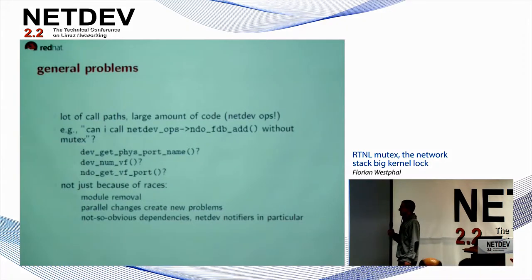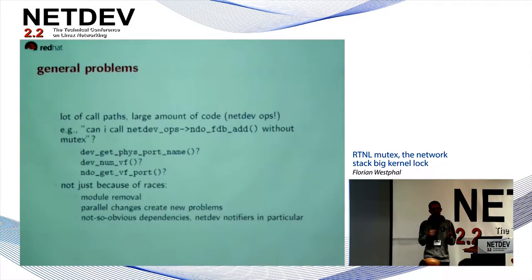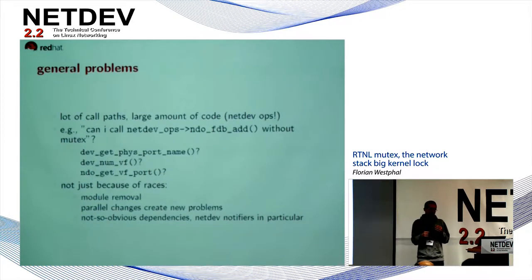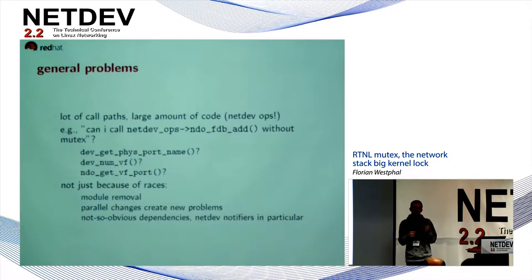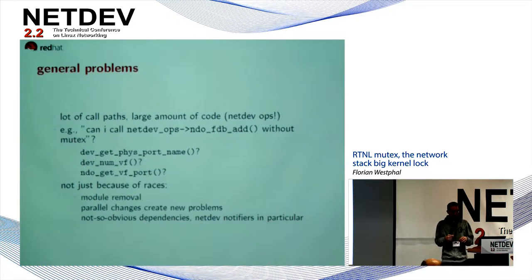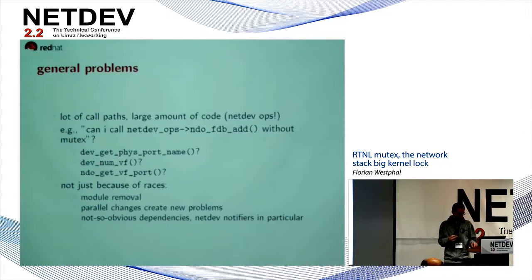The general problem when converting this is that we are talking about a huge amount of code, and most of this involves net_device operations that bring all device drivers into the game. You would have to audit every single network driver. A typical question would be: can adding ETF offloads work without the RTNL mutex? You would have to check if every single driver has a private lock, and if not, add one. The same question has to be repeated for every function that interacts with device drivers. We are also dealing with parallel module removals, requests moving a network link to a different namespace, and even worse — net device notifiers.